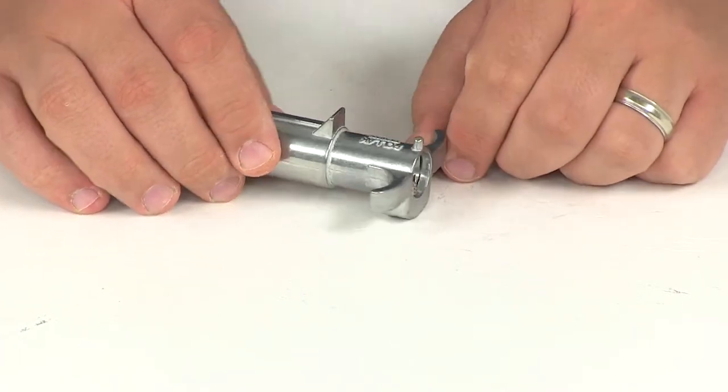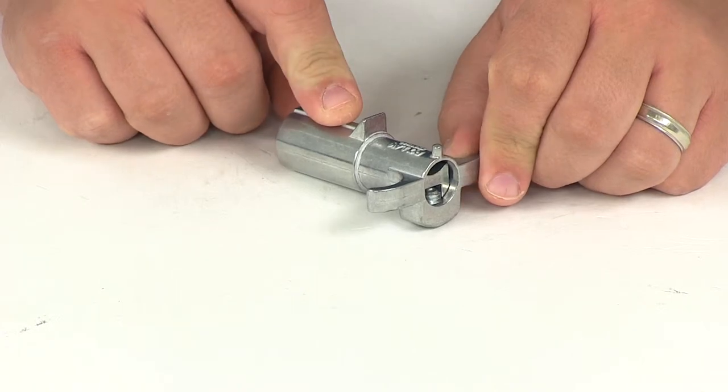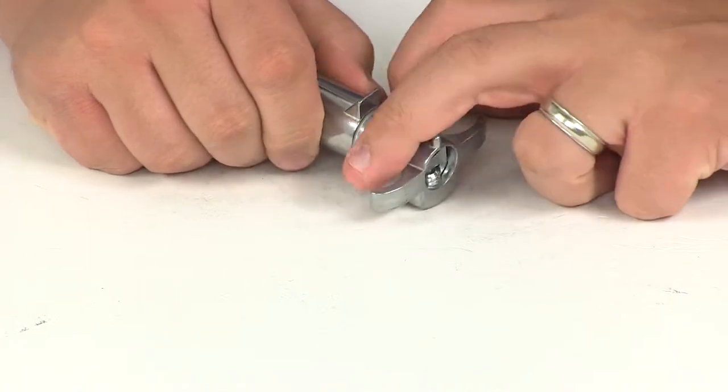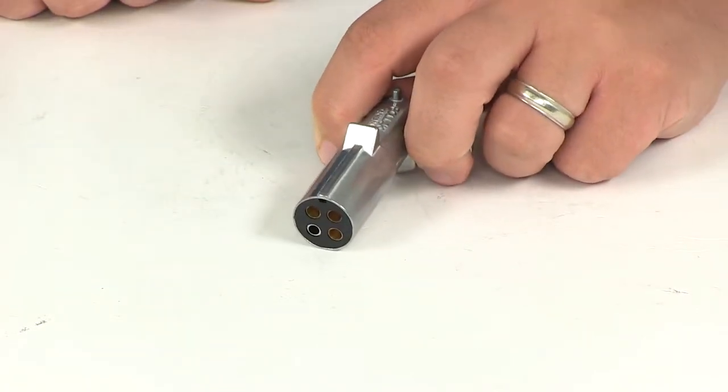It features solid brass terminal screws. The housing is made from zinc die cast construction for strength and durability. It's got nice finger pulls here for easy grip and a secure grip, so you can disconnect the plug very easily.